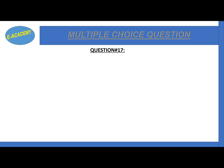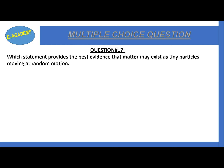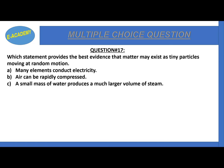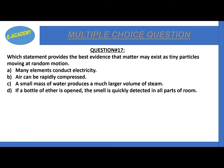Question number 17: which statement provides the best evidence that matter may exist as tiny particles moving at random? Options include: many elements conduct electricity, air can be rapidly compressed, a small mass of water produces a much larger volume of steam, or if a bottle of ether is opened the smell is quickly detected in all parts of the room. The correct option is D - the smell of the bottle of ether is detected in all parts of the room, which is an example of diffusion showing random particle motion.